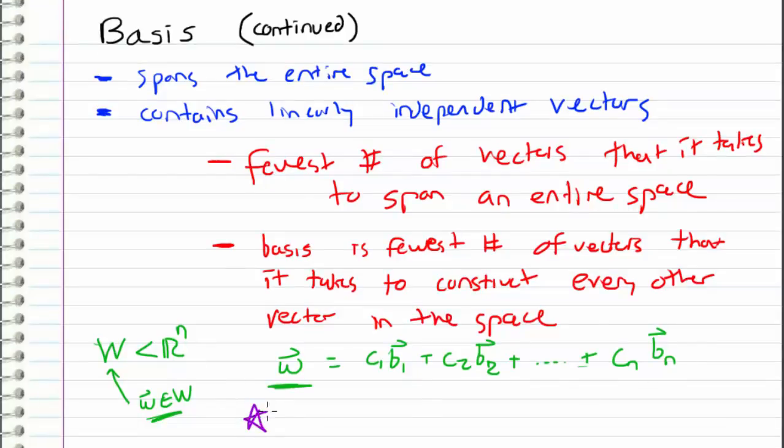And also, since each basis vector is linearly independent, then the number of basis vectors that we have in our basis represents the dimension of our space or subspace that we are interested in. For example, if we have a space W and the basis for the space is the set B1, B2, and B3, then we know that W is three-dimensional because each of these basis vectors is guaranteed to be linearly independent. Therefore, we know that the space that these basis vectors span has to be three-dimensional. So this means that W is three-dimensional.